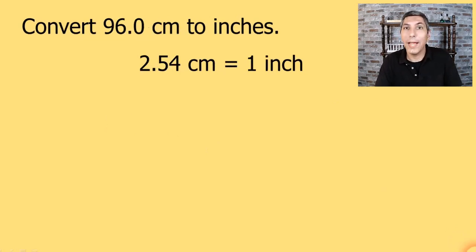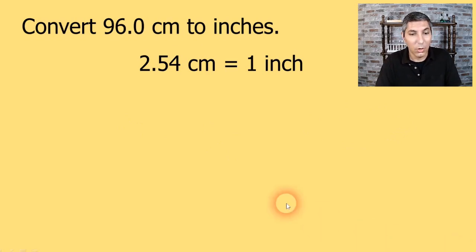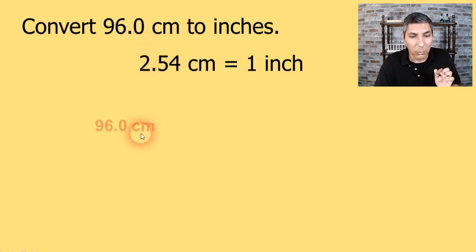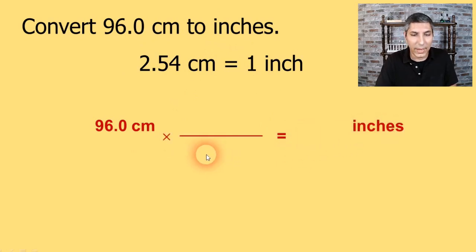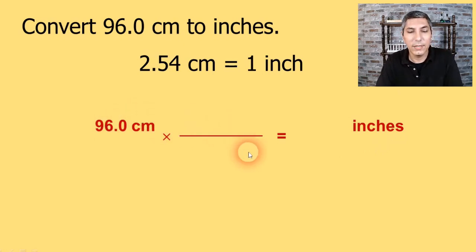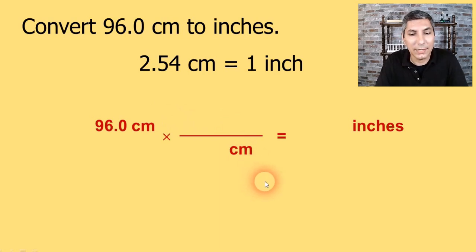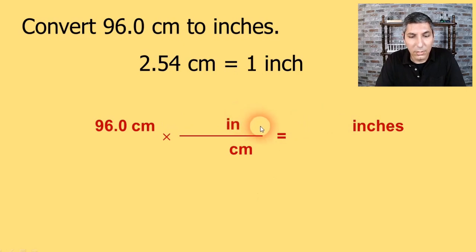Let's try this question: convert 96.0 centimeters to inches. We take 96.0 centimeters, since that's given to us, and write that down. Since we're converting to inches, I put an equal sign and inches over here at the end. In my conversion factor, since I'm starting with centimeters, centimeters needs to go in the denominator so it'll cancel out. And since I'm converting to inches, inches need to go on top.